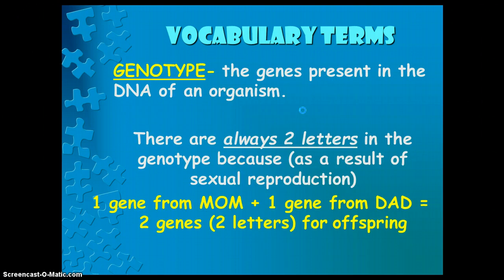Genotype refers to the genes present in the DNA of an organism. When we talk about a genotype, we normally use letters to represent it. There are always two letters in a genotype, because as a result of sexual reproduction, we get one gene from mom and one gene from dad, resulting in two genes for our offspring.